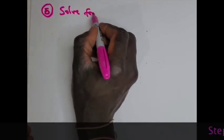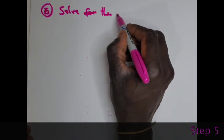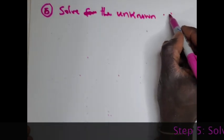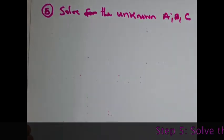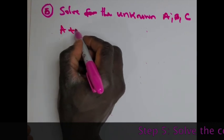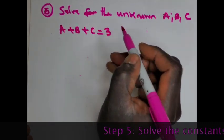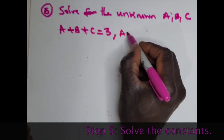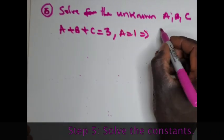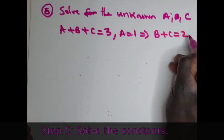Number five: solve for the unknowns A, B, C. So A + B + C = 3, but we already know A = 1, so that means B + C = 2.